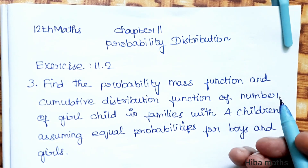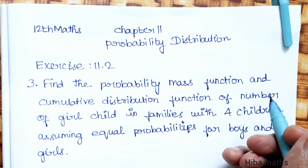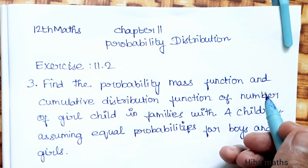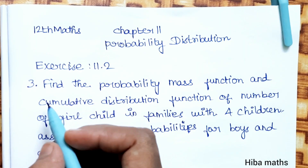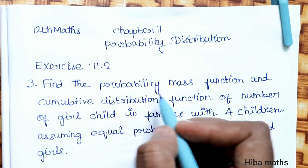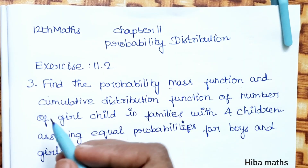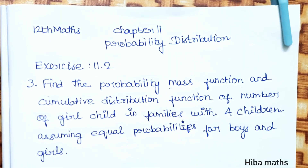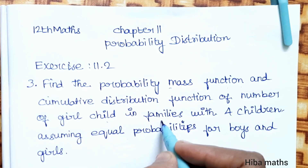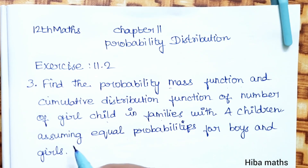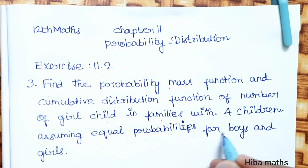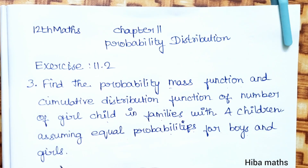Hello students, welcome to Hibamaks. 12th Standard Maths Chapter 11 Probability Distribution, Exercise 11.2, 3rd Question, episode 10. Find the Probability Mass Function and Cumulative Distribution Function of number of girl children in families with 4 children, assuming equal probabilities for boys and girls.